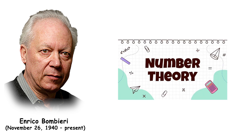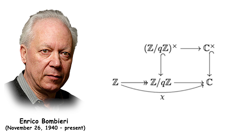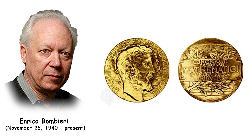Enrico Bombieri is an Italian mathematician who made significant contributions to number theory, algebraic geometry, and mathematical analysis. He is known for the Bombieri-Vinogradov theorem, which provides a major advance in the understanding of the distribution of prime numbers. Bombieri was awarded the Fields Medal in 1974 for his work in analytic number theory and related fields.